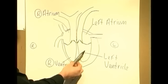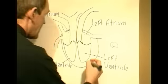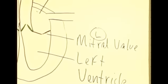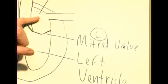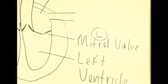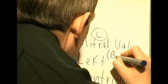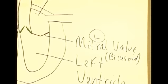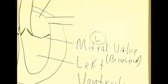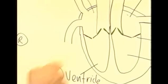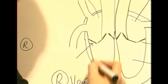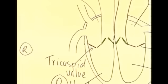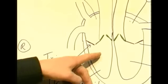Now between the left atrium and the left ventricle there's a valve. This valve is referred to as the mitral valve, located between the left atria and the left ventricle. In some books you will see this valve referred to as the bicuspid valve, but the correct way to refer to it is the mitral valve. Dividing the right atria and the right ventricle, this valve is called the tricuspid valve.